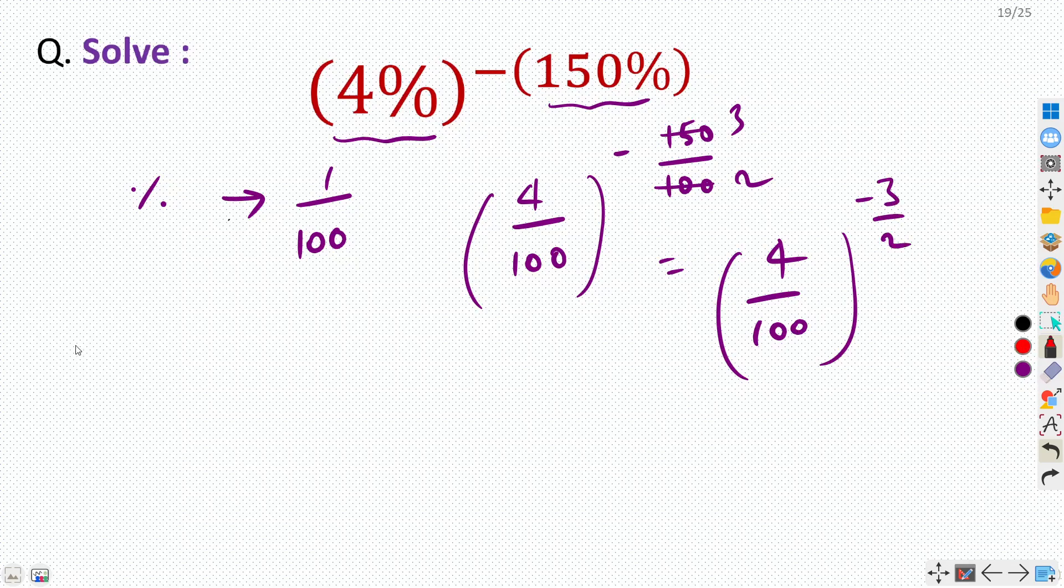Now here we will use our exponent property which says that if we have negative power, so a raised power minus m, and if I want to make this power as positive, then what I can do is we can take reciprocal of our base. So we can rewrite this as 1 by a raised power m.